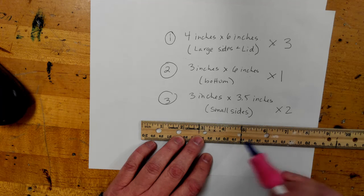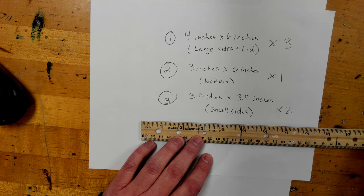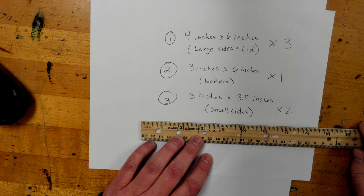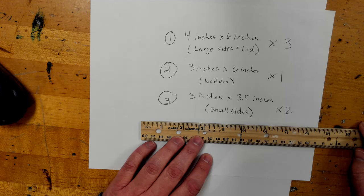Alright, so after you're done drawing out all your rectangles, then you're going to get some scissors. And you are going to cut out your rectangles, put them in your folder, because we will use them on our slabs when we start working with clay.